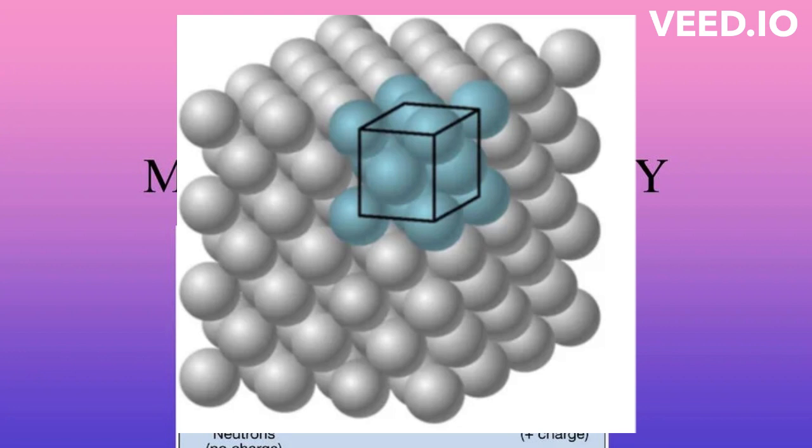The solid solution occurs as the result of ions substituting for one another in a crystal structure. The solid solution occurs at high temperatures, where you are forcing the two end-members to be in a solution.